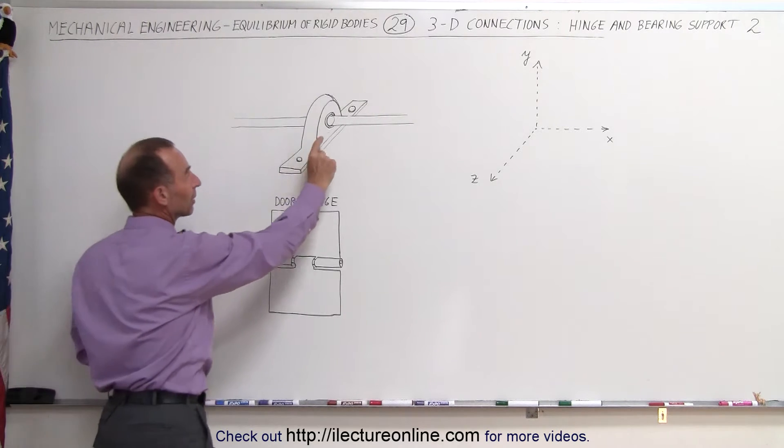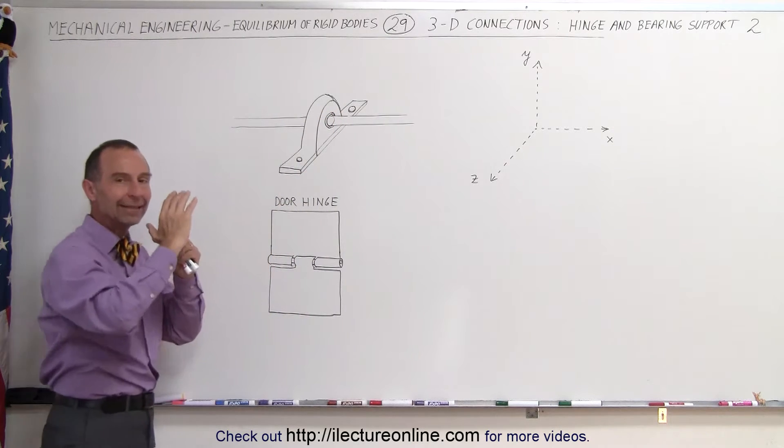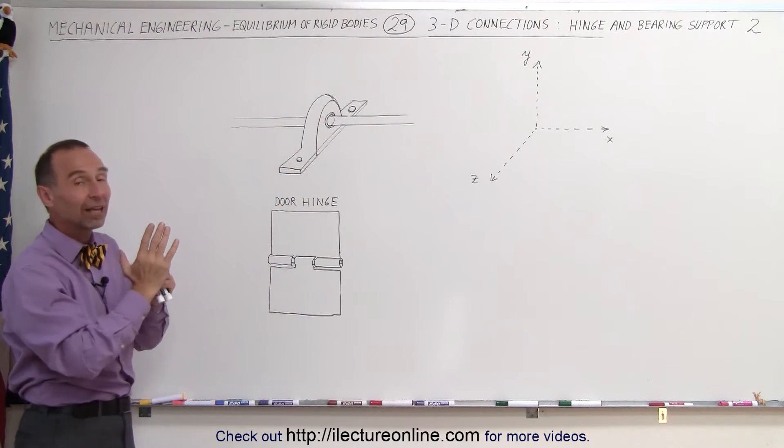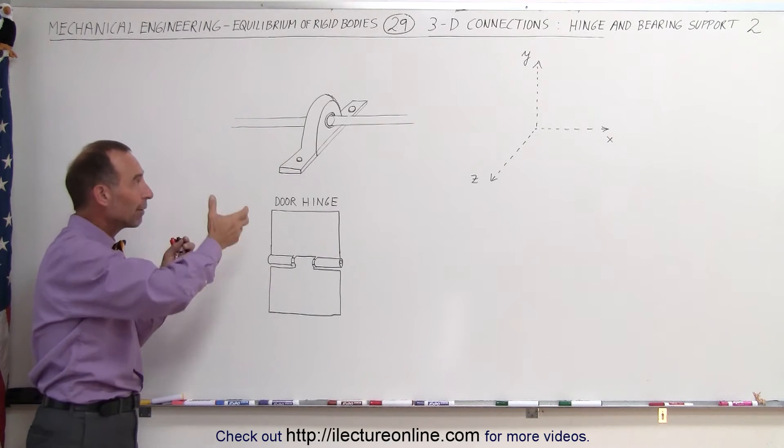Notice what we did here on this particular bearing support. We actually attach to the shaft a disc that is welded onto the shaft that prevents the shaft from moving in this direction through the bearing support.